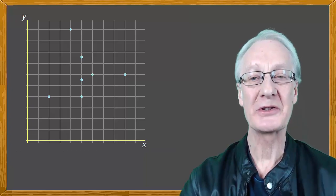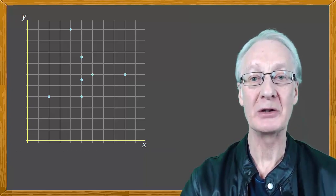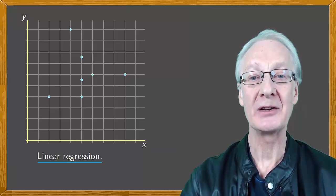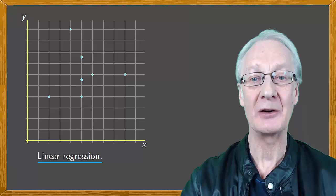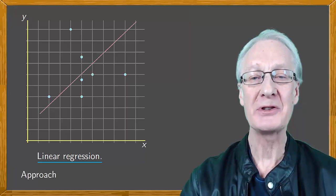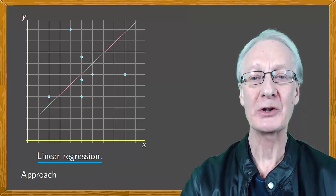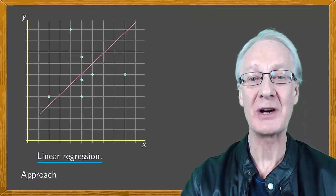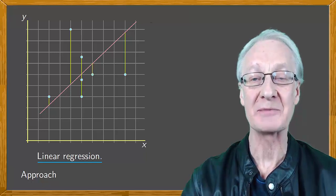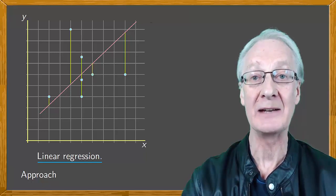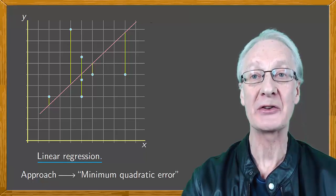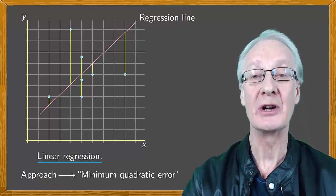We'll work here with straight lines, in other words, polynomials of degree one. This is known as linear regression, finding a line that looks like the point cloud. But that approach is ambiguous. What criteria will we adopt? Without going into detail, we'll try to find a line so that the sum of the squares of the vertical distances between each point and the line is minimal. The straight lines obtained by this criterion are called regression lines.